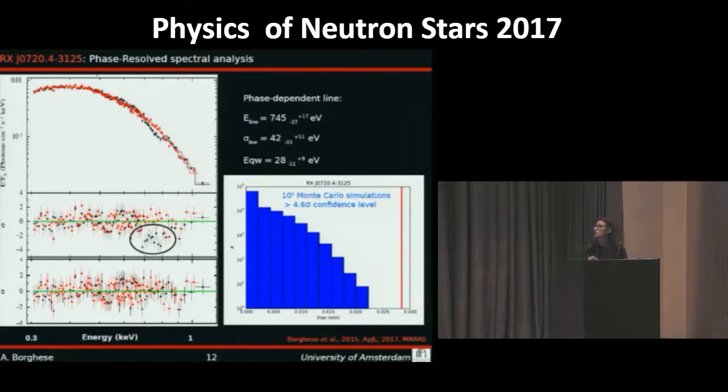We can see from the plot that none of the simulated spectra show an absorption line with an equivalent width higher than the observed value, which is the red line. So the probability of the line being a fluctuation is less than 10^-5, and we can interpret this value as a p-value. This p-value corresponds to a confidence level of 4.6 sigma.